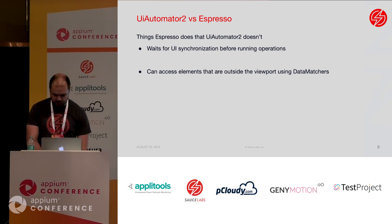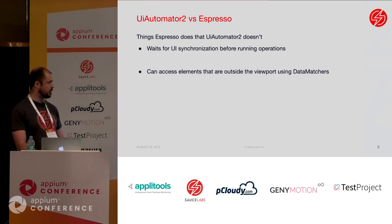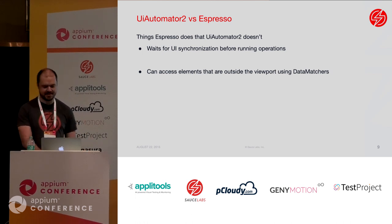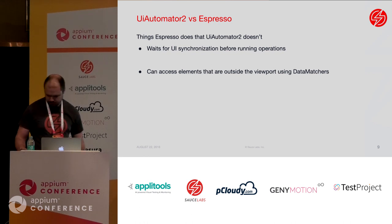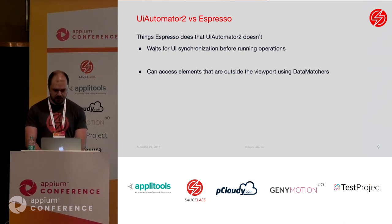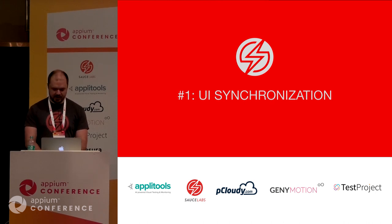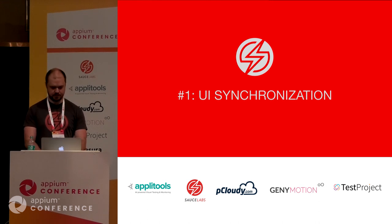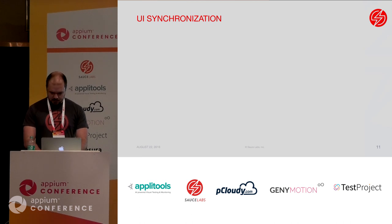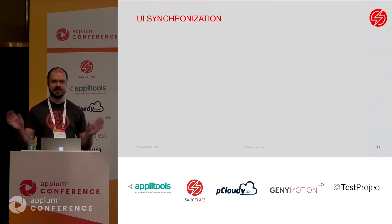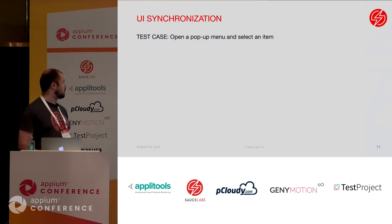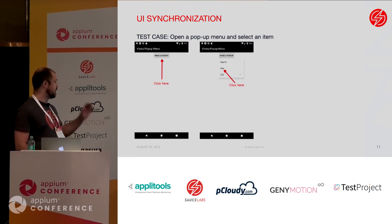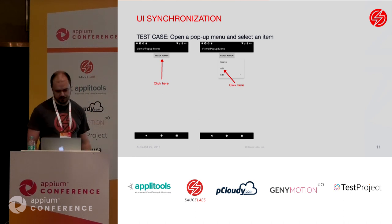Feature number one: Espresso has the ability to wait for the UI to be synchronized before performing operations. Feature number two: it can access elements that are outside of the viewport using data matchers. Starting with the first one — UI synchronization. Espresso waits for the UI to be synchronized before it performs its next operation. To illustrate this, let's go over a very basic test case: I want to open up a pop-up menu and select an item. I want to click the button that says 'make a pop-up', which will cause a menu to open, and then click on my item in that menu.